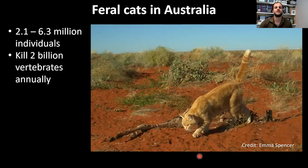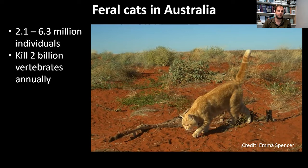When you think of feral cats in Australia, you likely imagine the deserts heaving with cats causing declines of bettongs and extinctions of bilby subspecies — and you're not far wrong. There are an estimated 2.1 to 6.3 million individual feral cats in Australia today, and they are thought to kill 2 billion vertebrates annually.